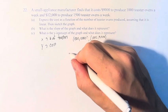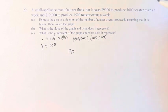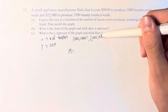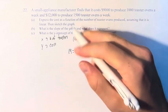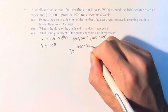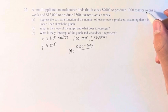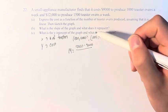Now we need to make the function. So first we get the slope is the change in y, which would be 12,000 minus 9,000, over the change in x, 1,500 minus 1,000.